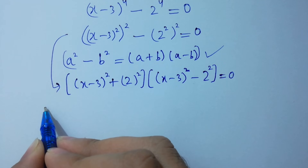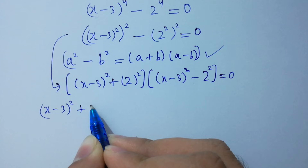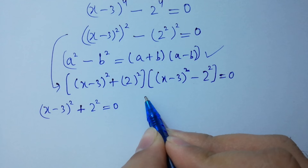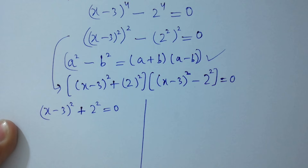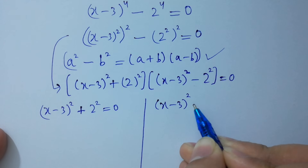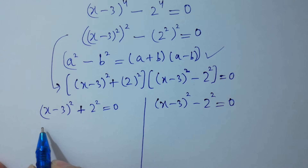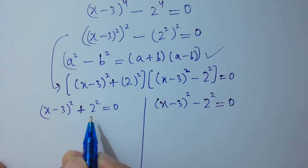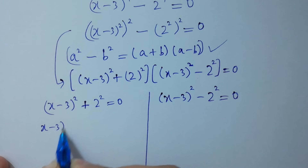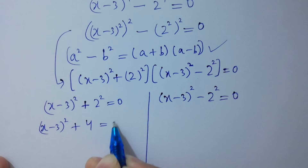Applying the formula of a² minus b², we get either (x minus 3)² plus 2² equals 0, or (x minus 3)² minus 2² equals 0. First, consider (x minus 3)² plus 2² equals 0, so (x minus 3)² plus 4 equals 0.